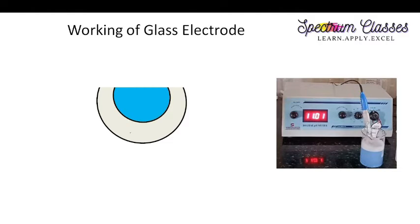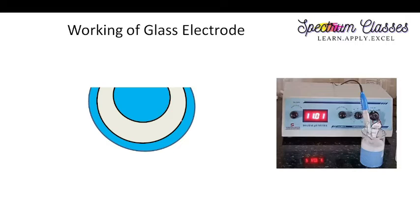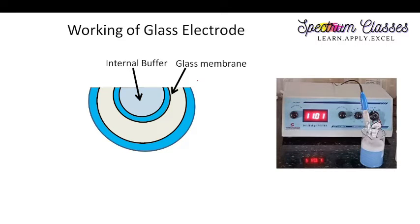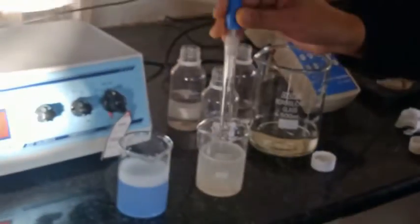When this glass electrode is dipped in the solution, a gel layer is formed both outside and inside the glass membrane. This blue part shows the gel layers; the gray part is the glass membrane. The internal buffer is filled inside the glass electrode. The glass membrane is approximately 0.2 to 0.5 millimeters thick, and the gel layer is 1000 angstroms, or 10 to the power of minus 4 millimeters. These are the approximate dimensions of the gel layer and the glass membrane.